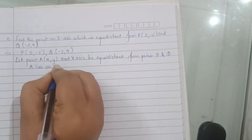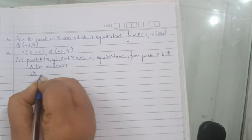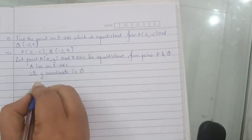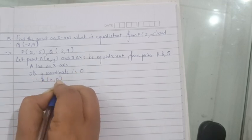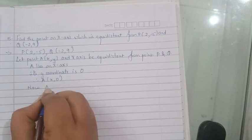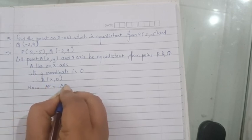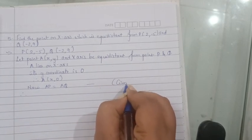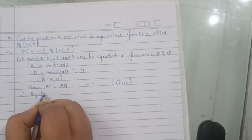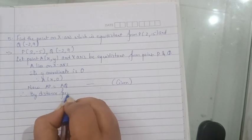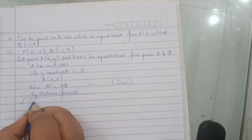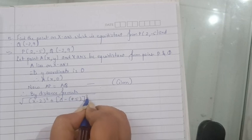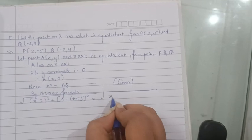Let point A(x, y) on the x-axis be equidistant from point P and Q. Since A is on the x-axis, its y-coordinate will be 0, so A becomes (x, 0). Since A is equidistant from P and Q, AP is equal to AQ. Therefore, by the distance formula: